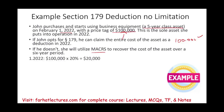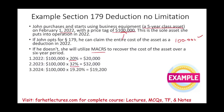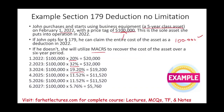Under MACRS for a five-year class, half-year convention, the depreciation rates are: Year 1 — 20%, Year 2 — 32%, Year 3 — 19.2%, Year 4 — 11.52%, Year 5 — 11.52%, Year 6 — 5.76%. If you don't know where these percentages come from, this is the five-year class half-year convention table. You need to be familiar with MACRS to understand Section 179.